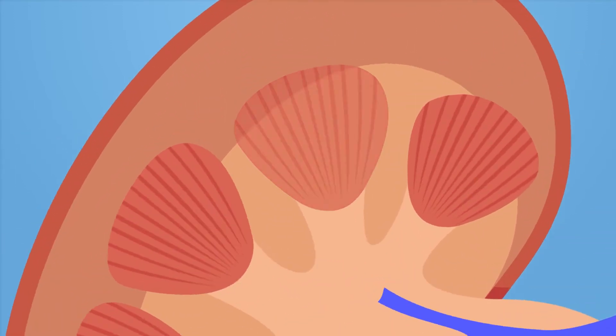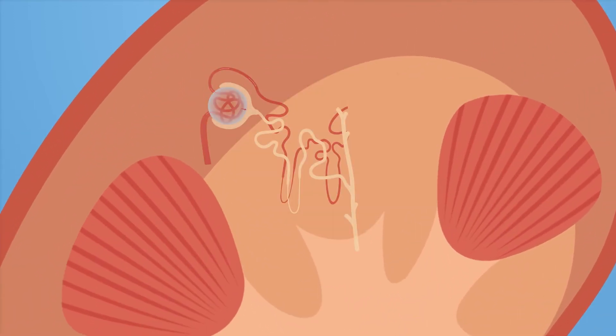The filtration units of our kidneys are called nephrons, and they are positioned across the cortex and the medulla. Each of our kidneys contains around a million nephrons.